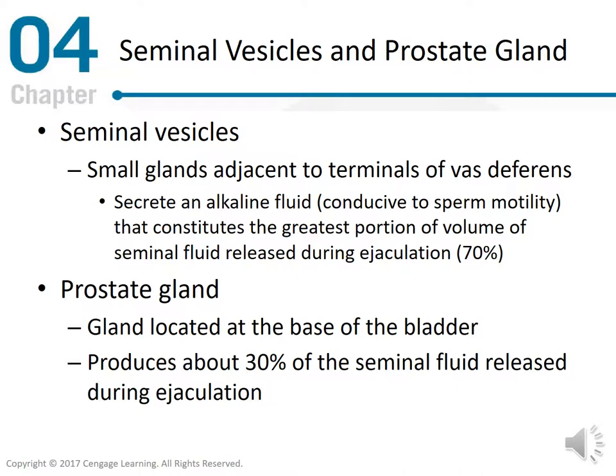Seminal vesicles and prostate gland. The seminal vesicles are small glands adjacent to the terminals of the vas deferens. They secrete an alkaline fluid, conductive to sperm motility, that constitutes the greatest portion and volume of the seminal fluid released during ejaculation — approximately 70%. The prostate gland is located at the base of the bladder and produces about 30% of the seminal fluid released during ejaculation.